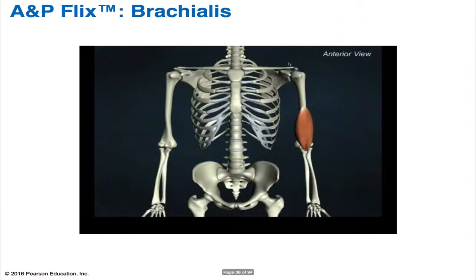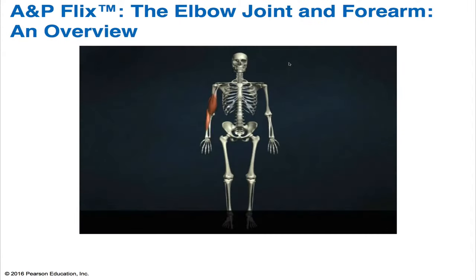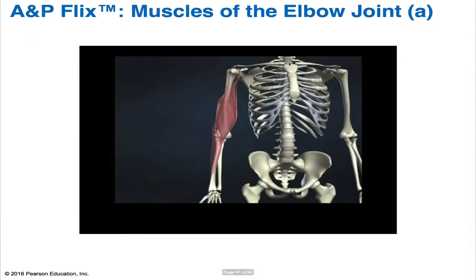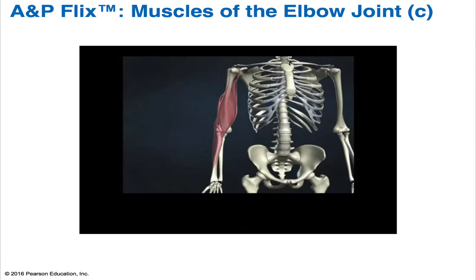Be sure to watch the animations for the biceps brachii, the brachialis, the brachioradialis, and the overview of the elbow joint and forearm. There are several animations for muscles of the elbow joint. You can find them at the Pearson website, on YouTube, or on the DVD that came with your book. Questions from these animations are highly likely to appear on the exam.